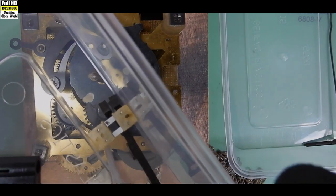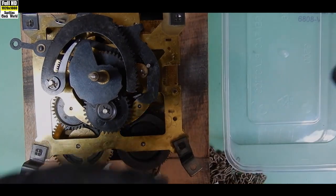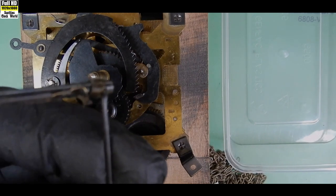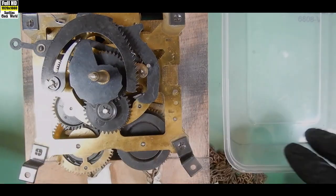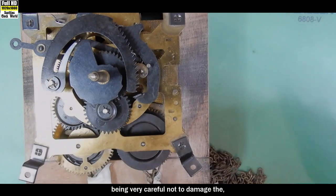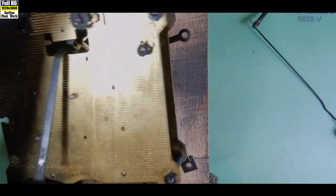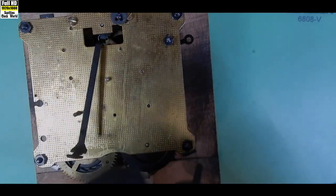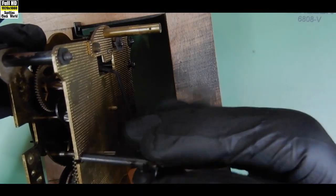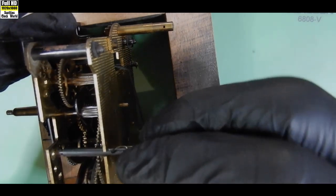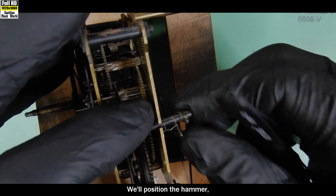And there's the suspension spring, and there's the pendulum leader. We've got to check that spring on that. There's a little bit of rust here, I'll run over that with a wire brush being very careful not to damage the spring. And then we'll turn the movement over and position the hammer.